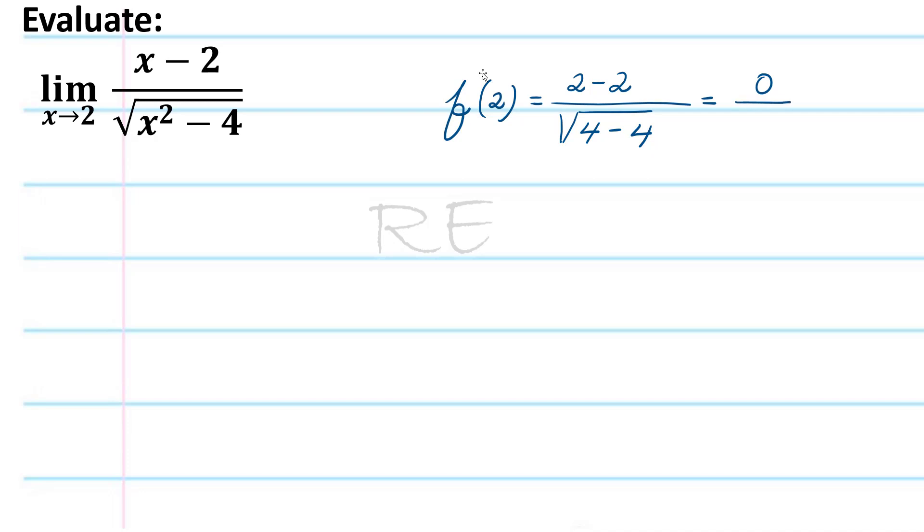We obtain 0 over 0, which is an indeterminate form. So we did not go anywhere.